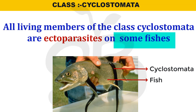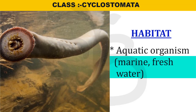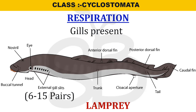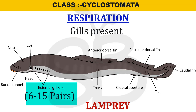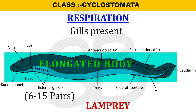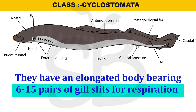These are Aquatic Organisms found in both marine and freshwater habitats. Aquatic organisms use respiration through gills. Vertebrate members are covered with gill slits. Cyclostomata members have 6 to 15 pairs of gill slits. They have an elongated body with 6 to 15 pairs of gill slits for respiration.